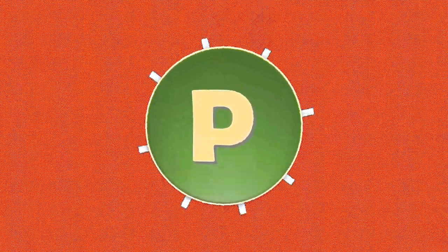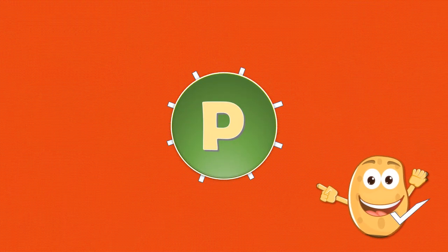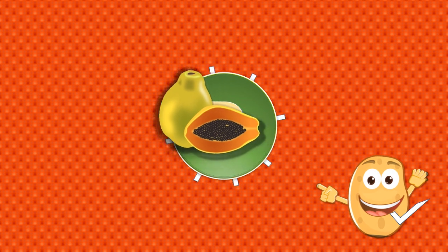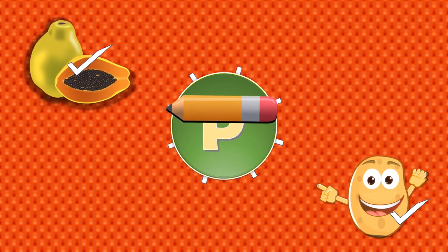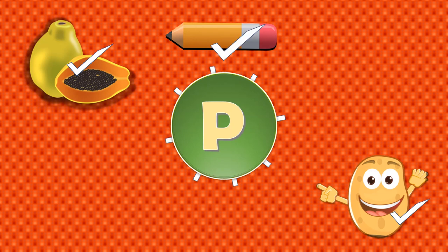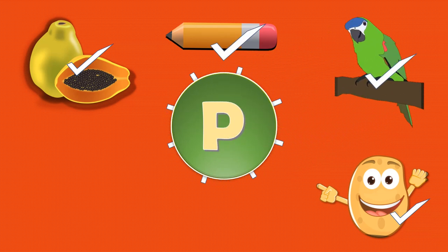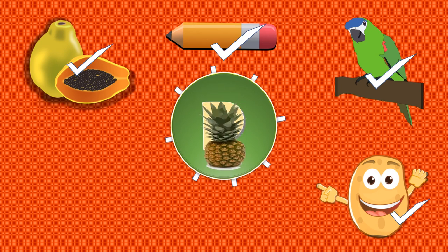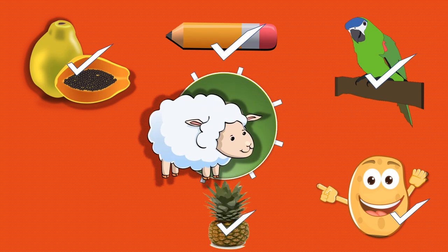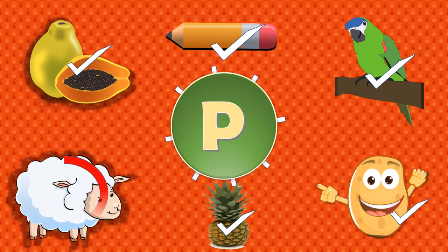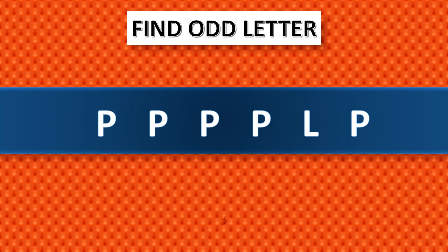P. P for potato, correct, yes. P for papaya, correct, yes. P for pencil, correct, yes. P for parrot, correct, yes. P for pineapple, correct, yes. P for lamb — no, it's wrong. Find odd letter.